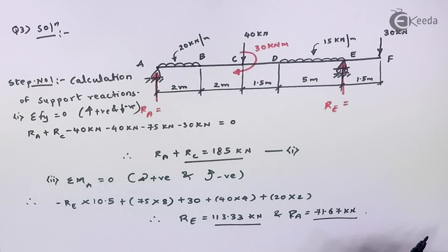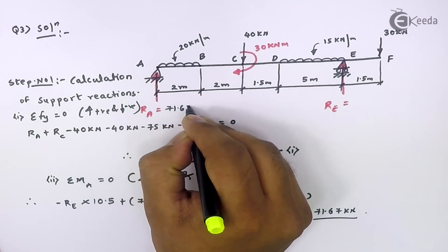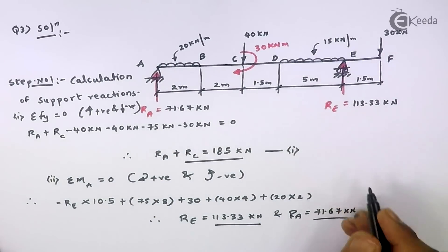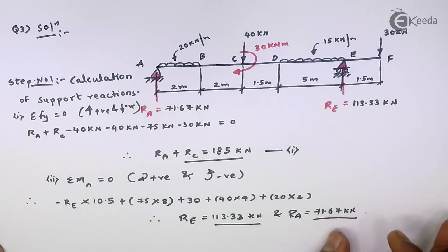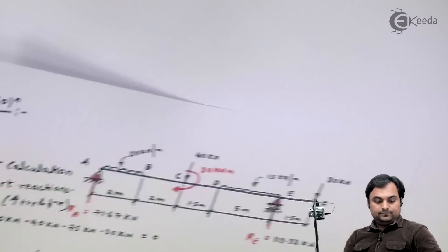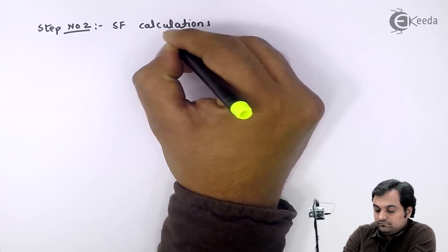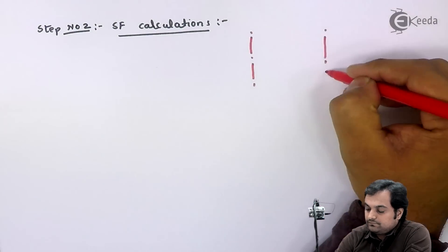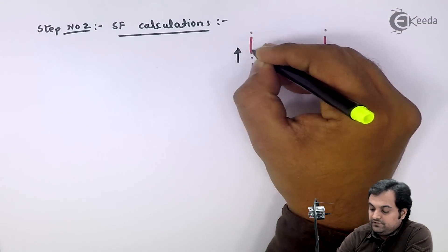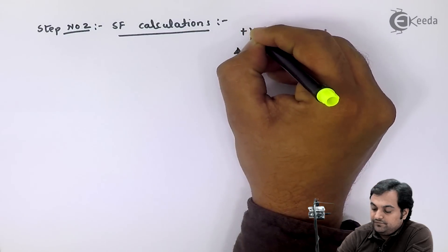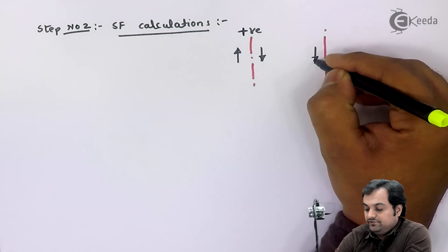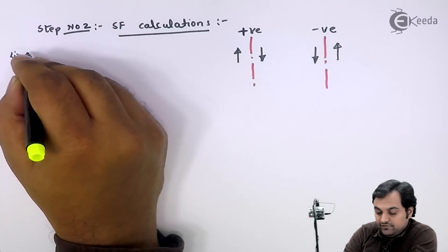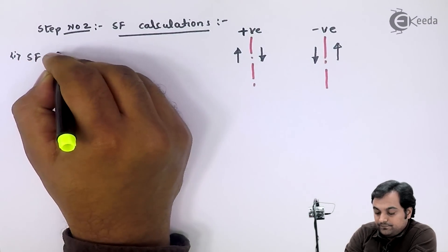After completion of step one, we go to step number two: shear force calculations. In shear force calculations, first I'll draw the sign convention—upward force to the left, downward force to the right, both are positive; downward force to left and upward force to right, both are negative. So I'll start SF calculation with point A.